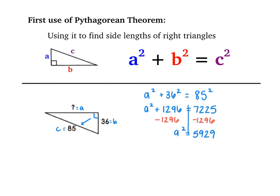That's going to leave me with a squared equals 5,929. Now that my a squared is by itself, I'm allowed to use the inverse of squaring, which is the square root, to get a by itself. My final answer is a equals 77.